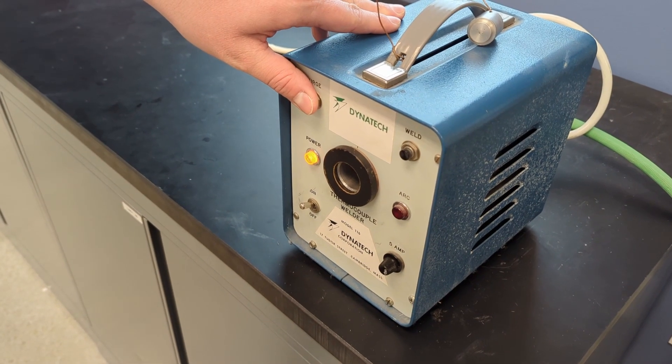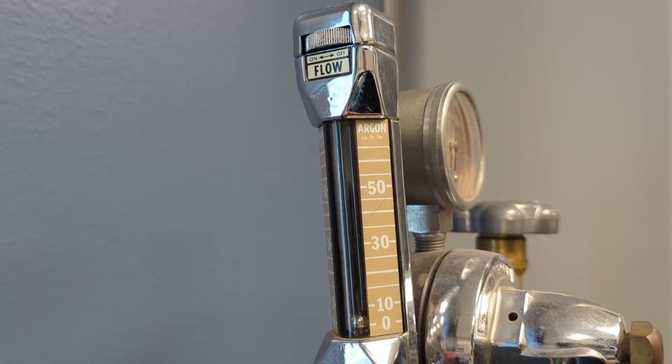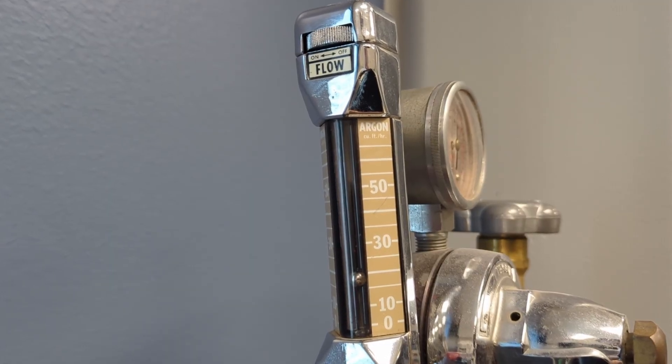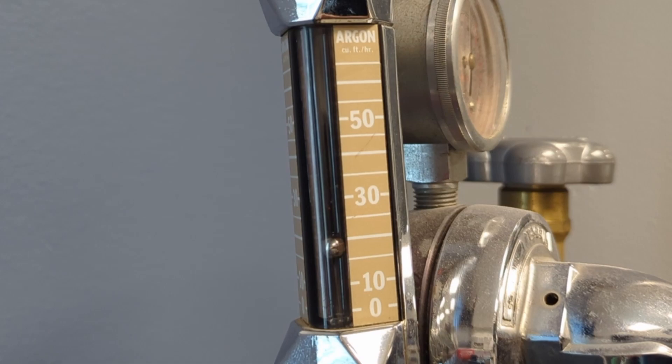Press the purge button to flush the weld area with argon gas and check that sufficient argon flow is maintained. Generally 20-25 cubic feet per hour is preferred.